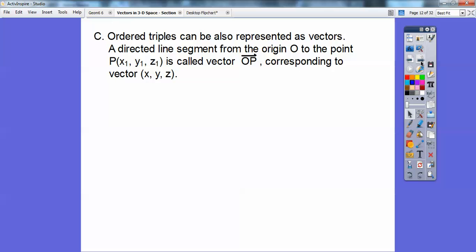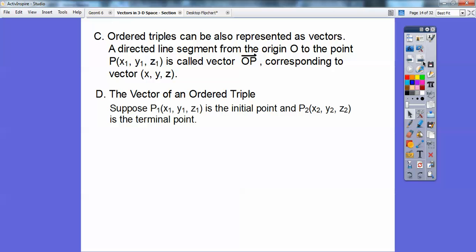Okay, so ordered triples can also be represented as vectors. Just like we did ordered pairs as vectors, we can do ordered triples as vectors. So a directed line segment from the origin to the point P, which is (x₁, y₁, z₁), is called vector OP, and it corresponds to the vector (x, y, z). The ordered triple (x, y, z).